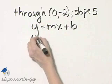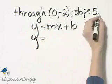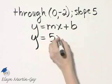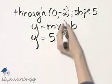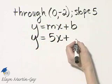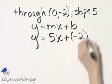So that will be y is equal to, we're given the slope is 5x, and then we're given the y value of the y-intercept, and that is negative 2.